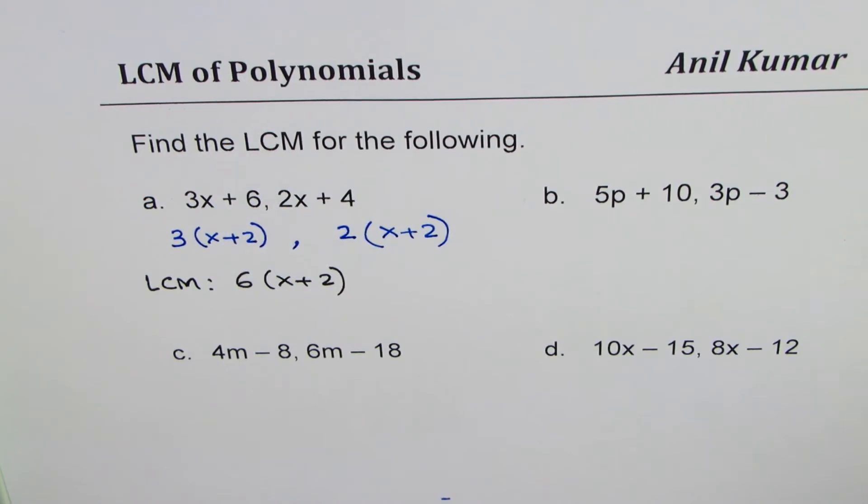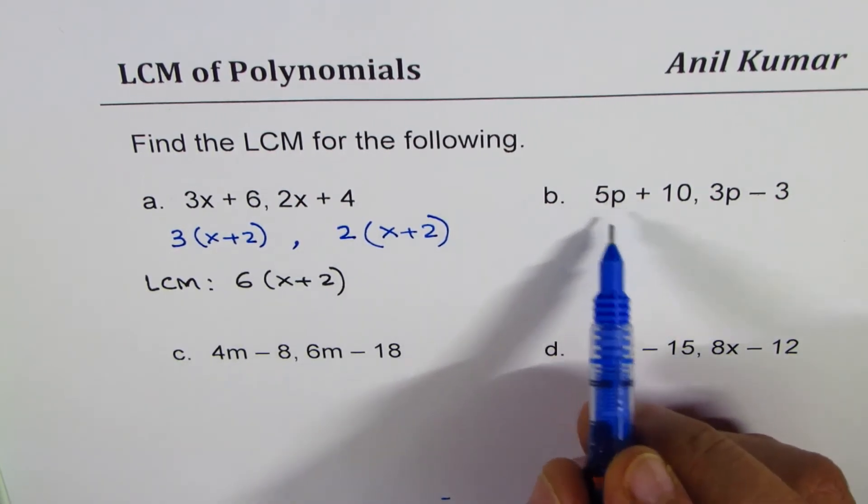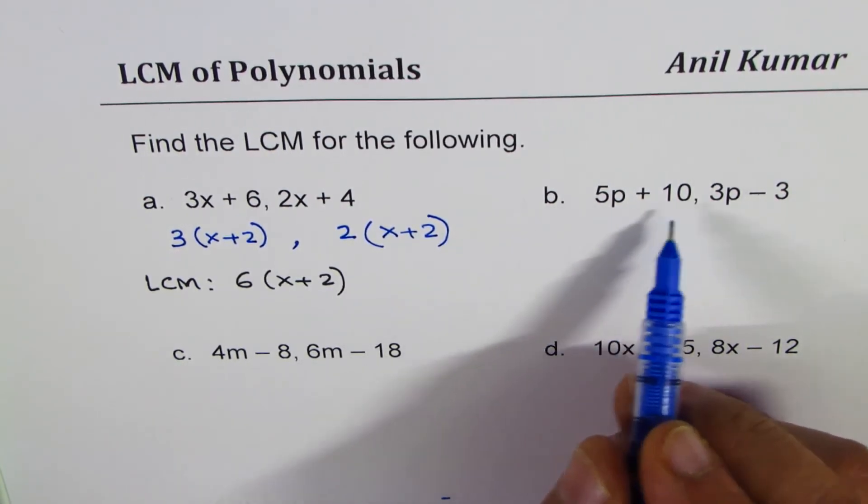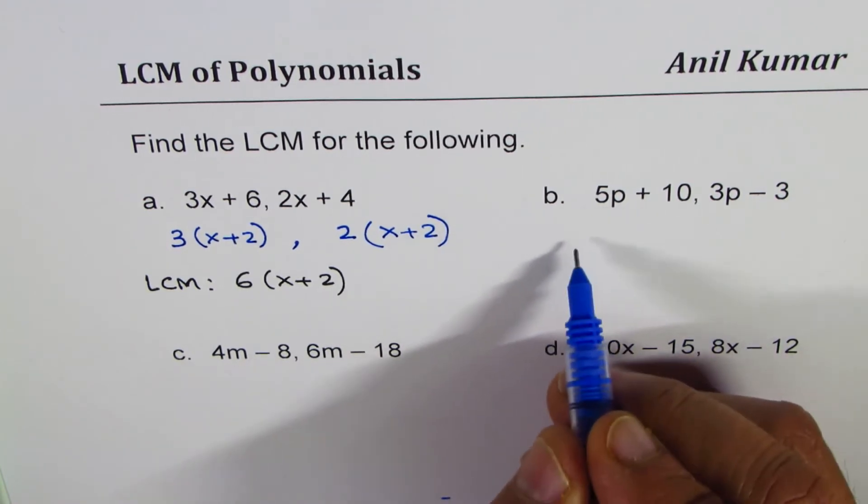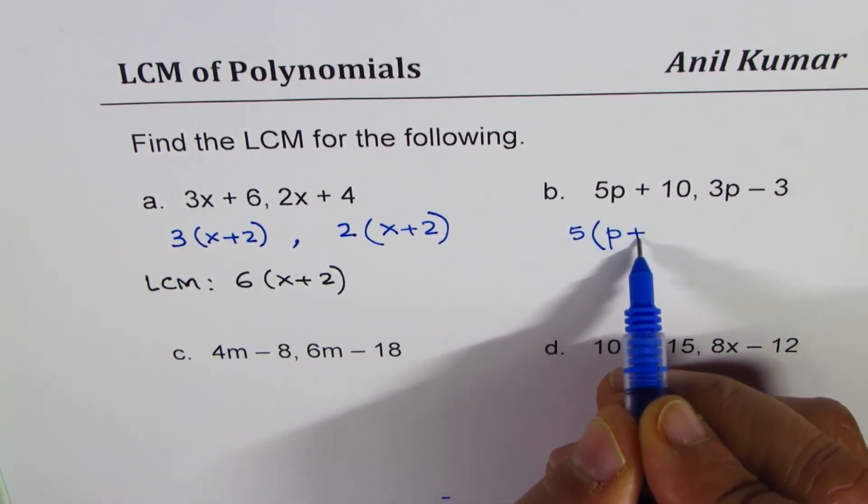I hope the concept is clear. Let's do another one. You will soon get the knowledge of how to do it. 5p plus 10, what is common here? 5 is common. And then we have p plus 2.